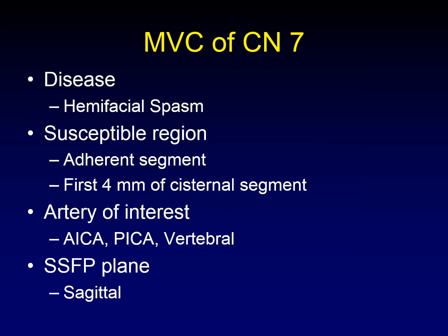On to the facial nerve. The disease of microvascular compression of the facial nerve is hemifacial spasm — uncontrolled spasming of one half of the face. The susceptible region of the seventh cranial nerve is the adherent segment along the underside of the pons before you get to the root entry point, and the first four millimeters of the cisternal segment closest to the brain stem. There is biologic variation, but on average it's about four millimeters.